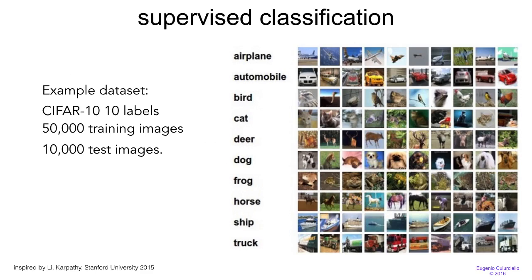For example, we may use a dataset like CIFAR-10, which has 10 different classes: airplane, automobile, bird, cat, deer, dog, frog, horse, ship, and truck. It has 50,000 training images — images we use to train our statistical machine — and 10,000 test images to evaluate how we are doing.